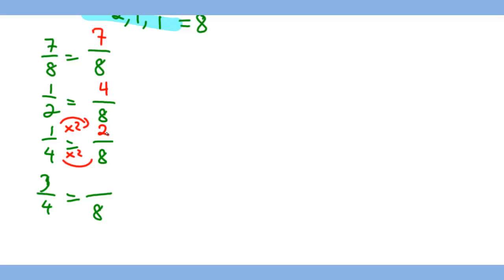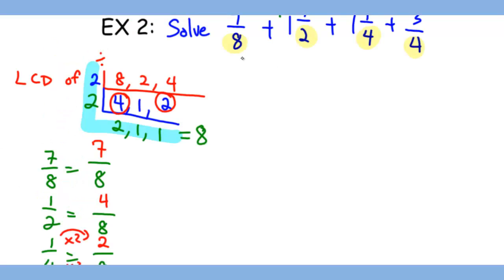So you get 2/8. And for 3/4 you times 2 again, so you get 6/8. Now let's write them back to the question.